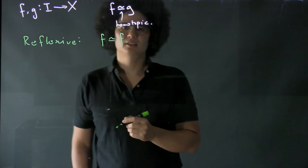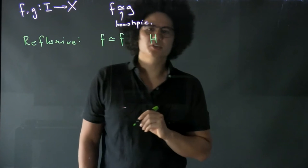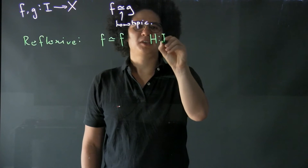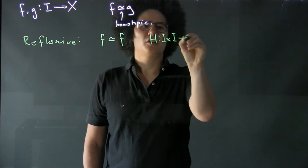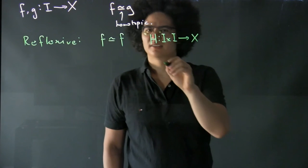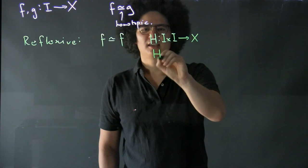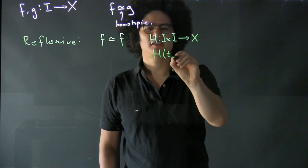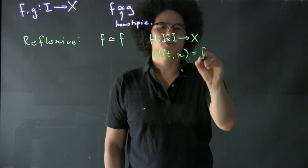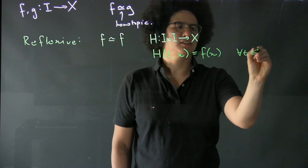In order to do that, we need to construct a homotopy from F to itself. And so what should that look like? Well that's just going to be the homotopy where we set H(t,x) is equal to F(x) for all T in the interval.